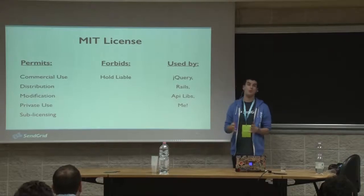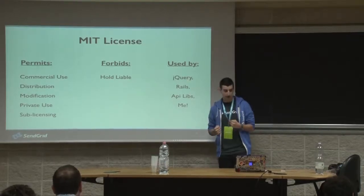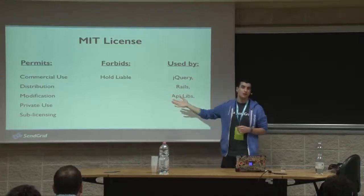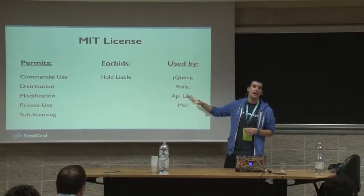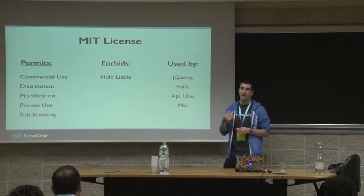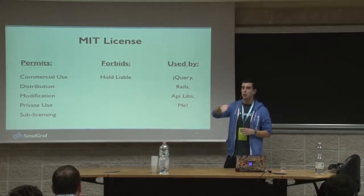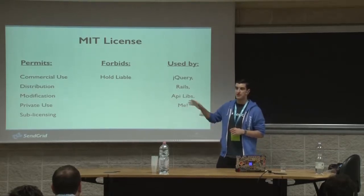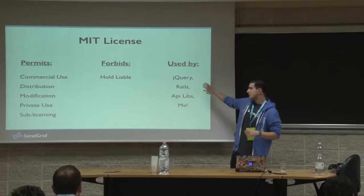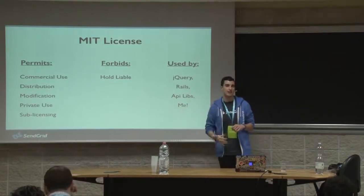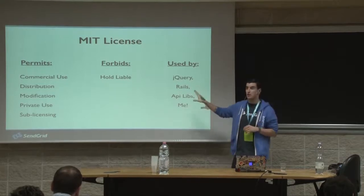The MIT license — the most popular one — says: I want to keep things simple and permissive. It permits commercial use, distribution, modification, private use, and sub-licensing. It forbids holding the creator liable — if you attach this license, anybody who downloads, modifies, or redistributes your software can't hold you personally liable for any problems that arise. It's used by jQuery, Rails, most companies who have API libraries. All of my software is MIT-based, and it's the most frequently used license you'll find on GitHub.